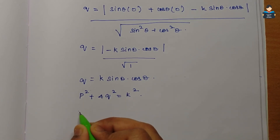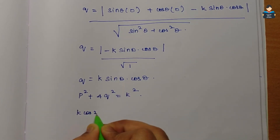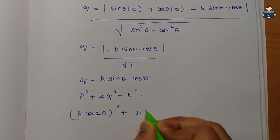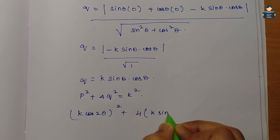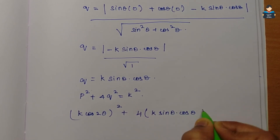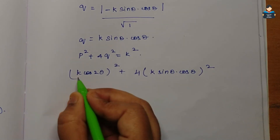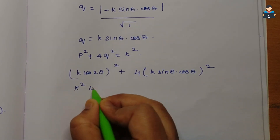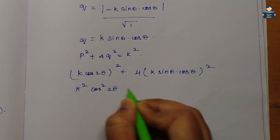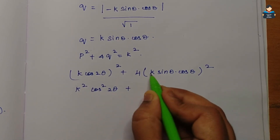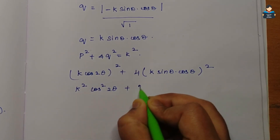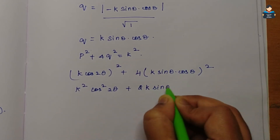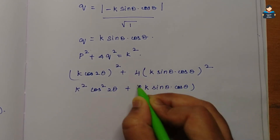Now we compute p² + 4q². We have p = k cos2θ, so p² = k² cos²2θ. And q = k sinθ cosθ, so 4q² = 4k² sin²θ cos²θ = k²(2 sinθ cosθ)².